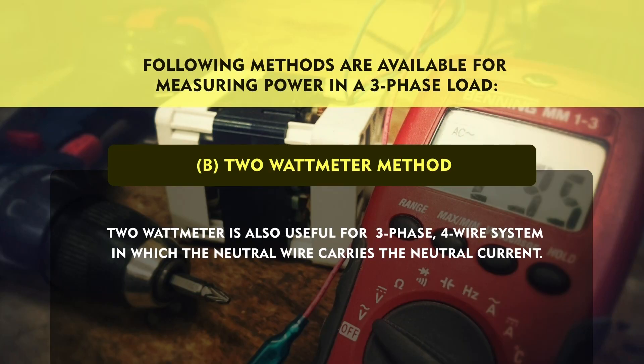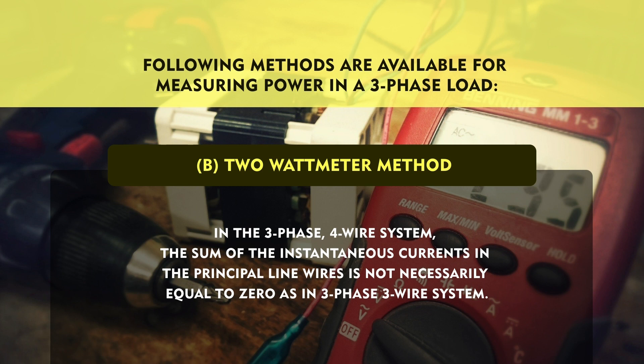This method can also be used for the three-phase four-wire system in which the neutral wire carries the neutral current. In this method, the current coil of the wattmeter is supplied from current transformers inserted in the principal line wire in order to get the correct magnitude and phase difference of the current in the current coil of the wattmeter. Because in a three-phase four-wire system, the sum of the instantaneous current in the principal line wire is not necessarily equal to zero as in a three-phase three-wire system.